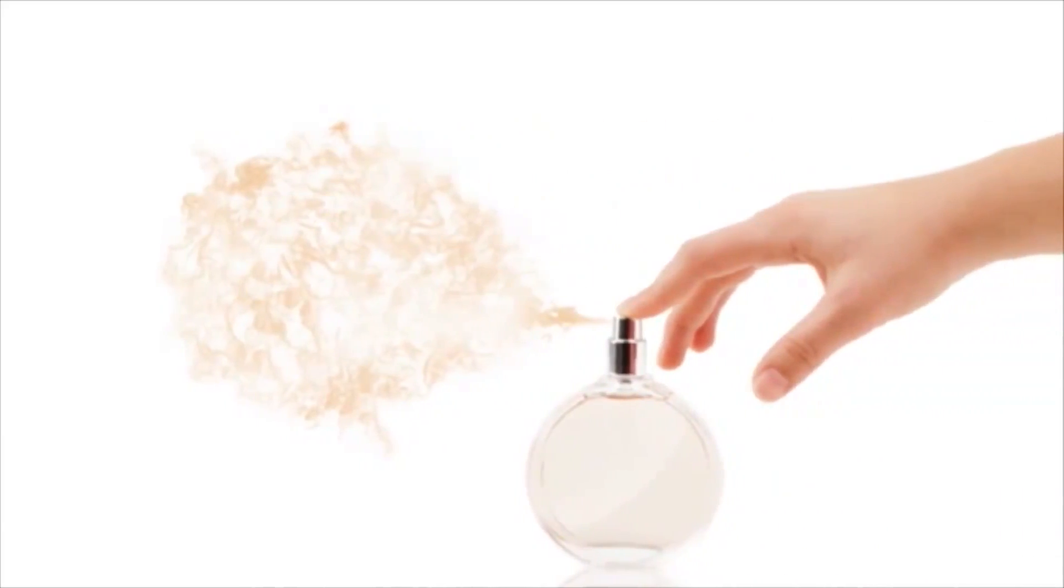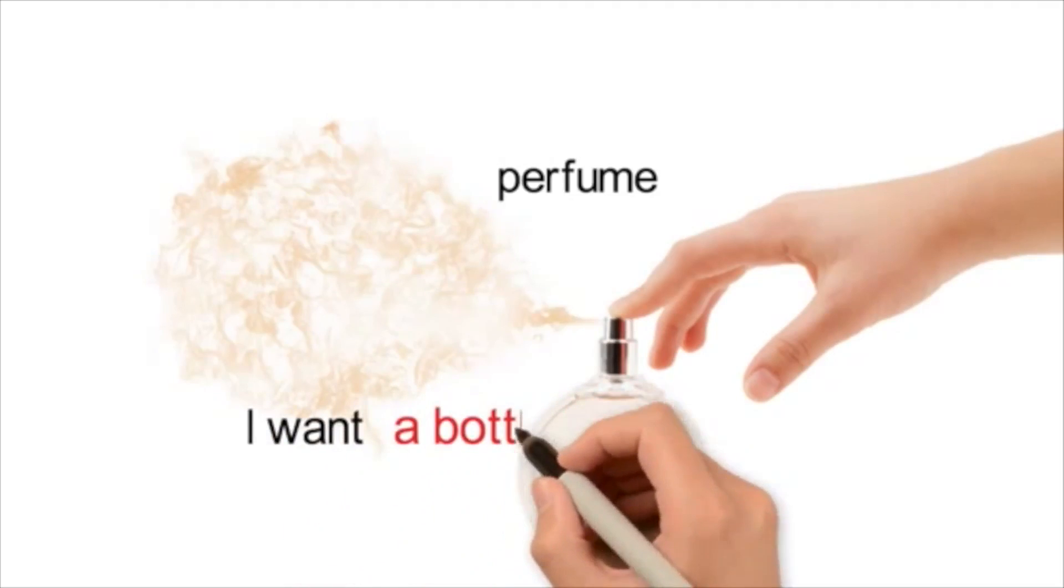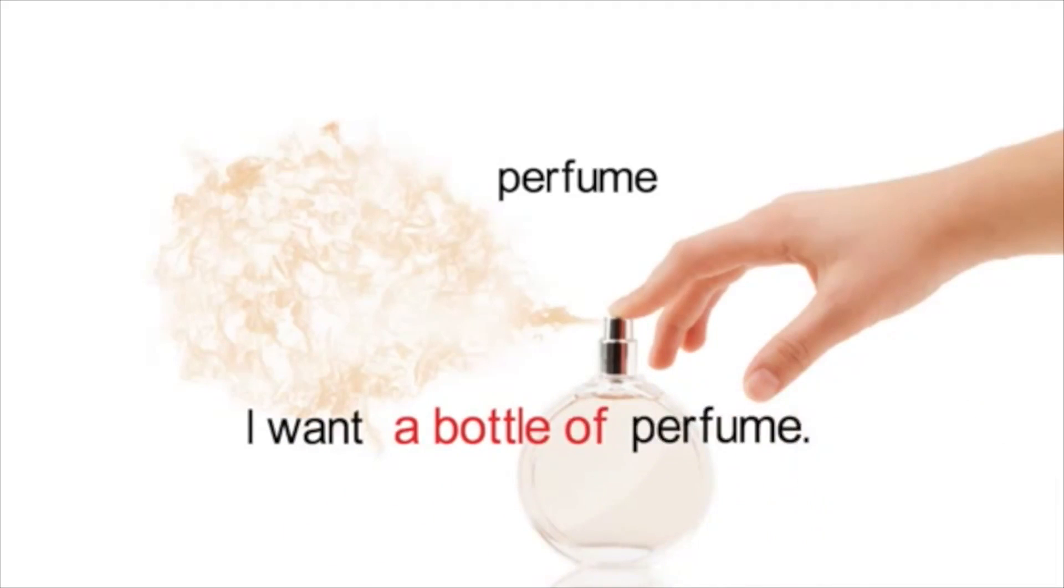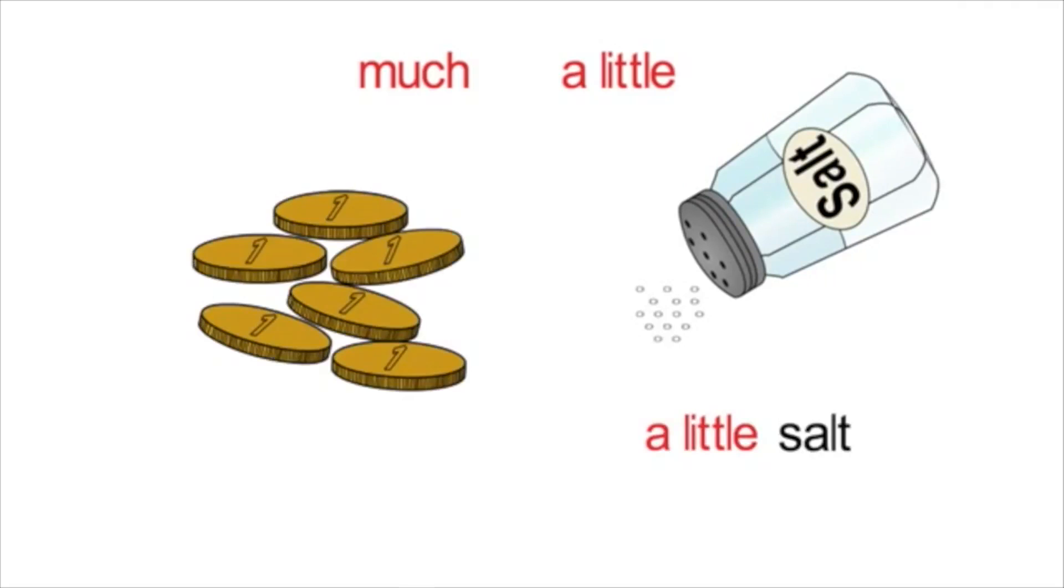You can count other liquids, like perfume, and you could say, I want a bottle of perfume. Another way to make uncountable nouns seem plural is by adding the words much and a little. So, for example, a little salt or not much money.